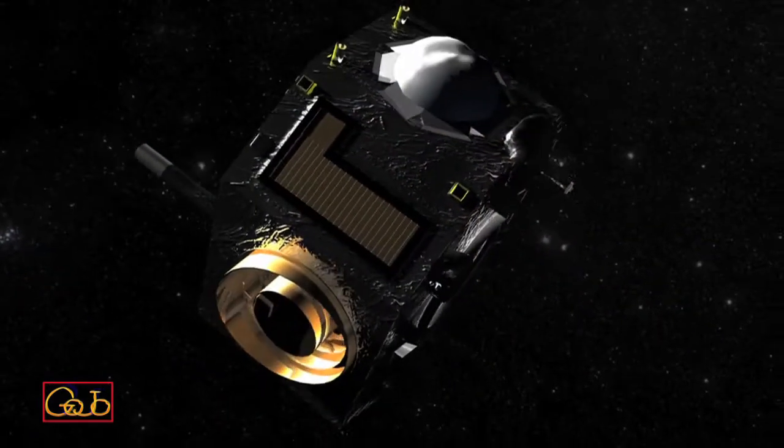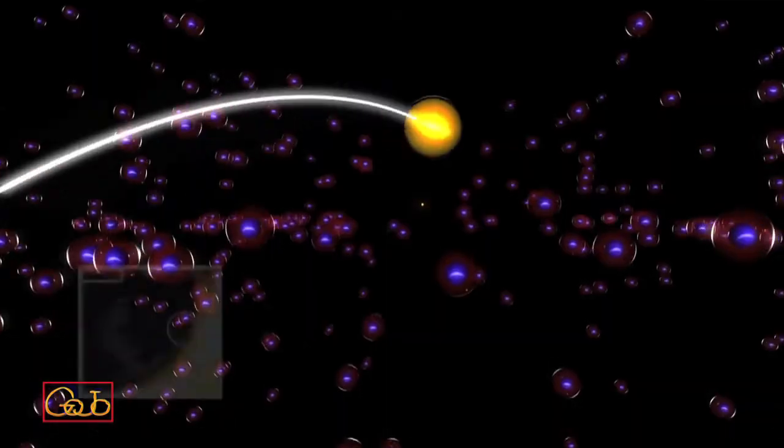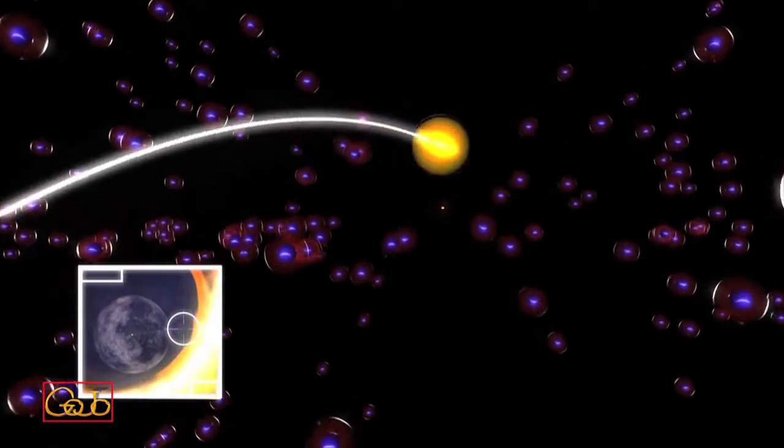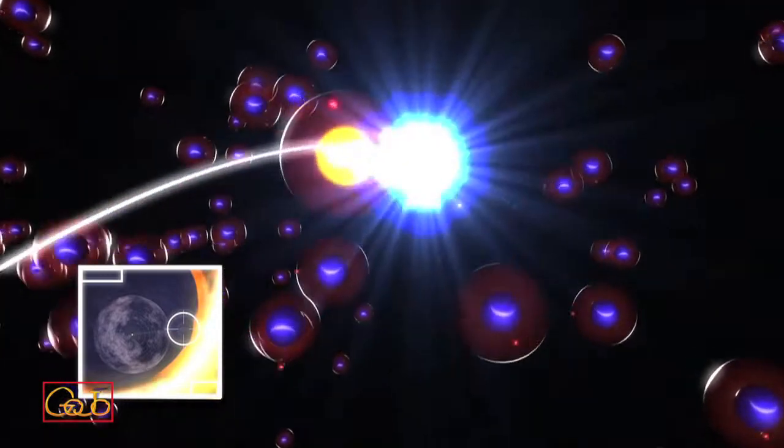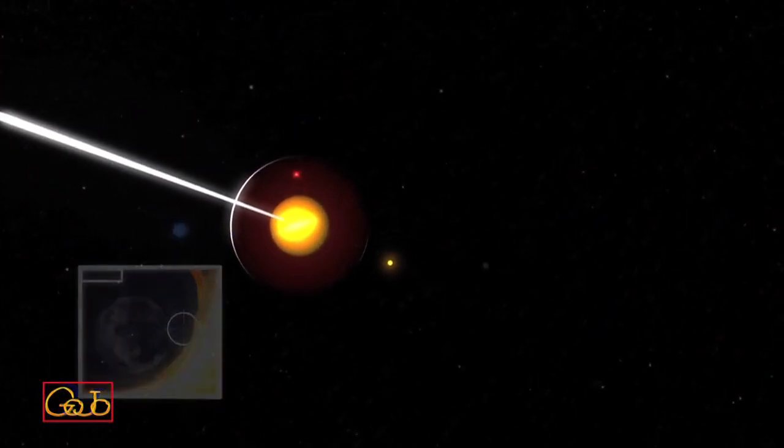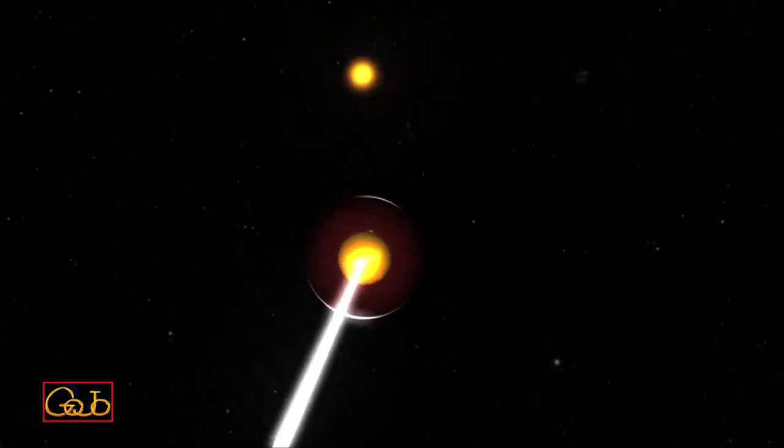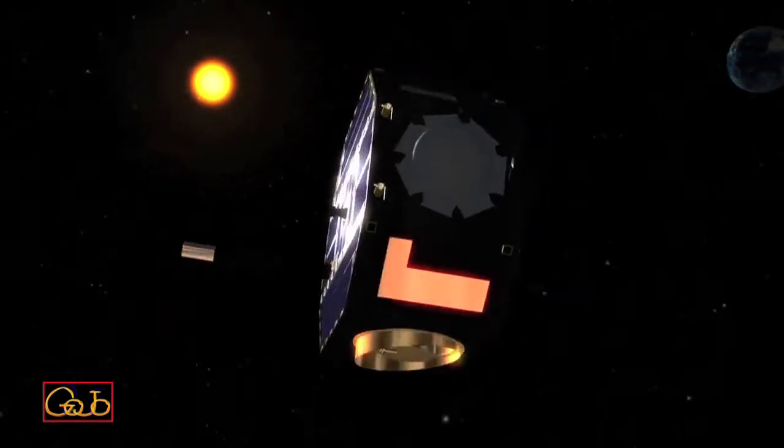IBEX can map such regions because it uses a technique called Energetic Neutral Atom Imaging. An energetic charged particle in the outer heliosphere hits a hydrogen atom, stealing its electron and becoming neutral. It then travels straight, though some of them come back toward the inner heliosphere. There, they collide with IBEX and are detected.